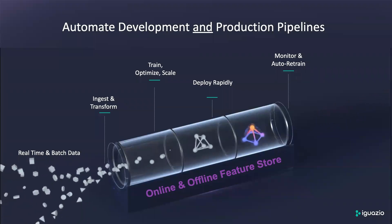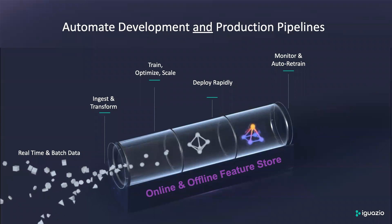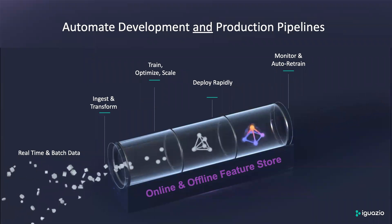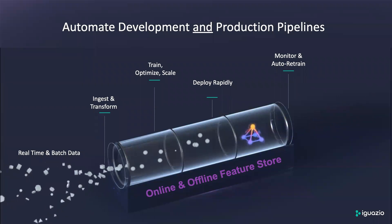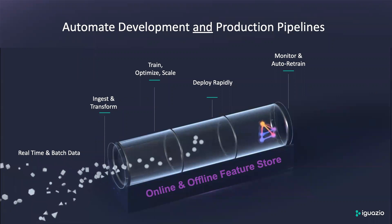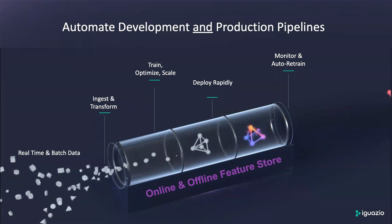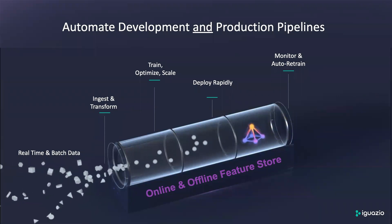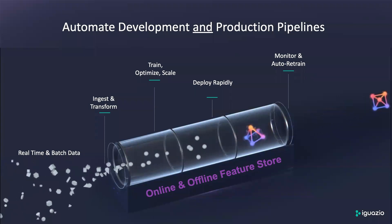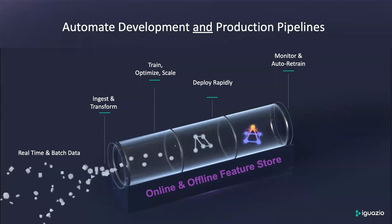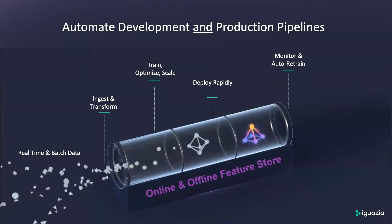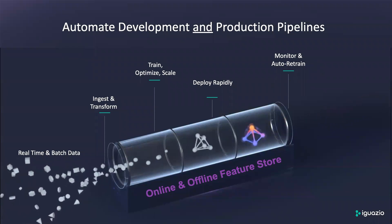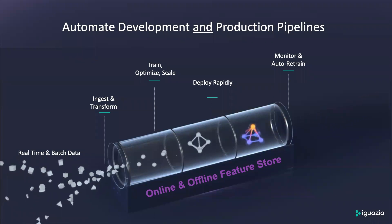This allows us to automate development and production pipelines, whether you're looking to ingest data in batch or real time, train your models at scale, deploy them to production, or monitor and retrain your models that you already have in production. All of this is using our online and offline feature store, which warrants an entirely separate conversation, which we'd be more than happy to have with you.